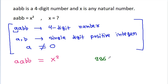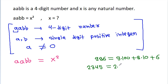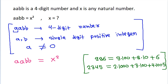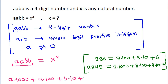For example, 986 is equal to 9 times 100 plus 8 times 10 plus 6. And 2345 is equal to 2 times 1000 plus 3 times 100 plus 4 times 10 plus 5. So AABB will be A times 1000 plus A times 100 plus B times 10 plus B.